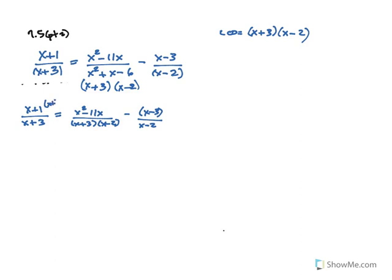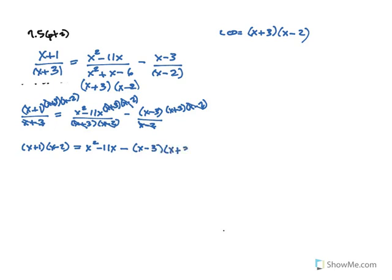Then I multiply everybody by the LCD and cancel. The x plus 3s cancel, leaving x plus 1 times x minus 2. I write the parentheses so you understand that when you cancel the denominators, whatever is left is multiplied by whatever is still in the numerator. The x minus 2s cancel on the right, leaving x squared minus 11x minus — then x minus 3 times x plus 3. So we have a lot of distributing to do: x squared minus 2x plus 1x minus 2, and x squared minus 11x minus x squared plus 3x minus 3x minus 9.